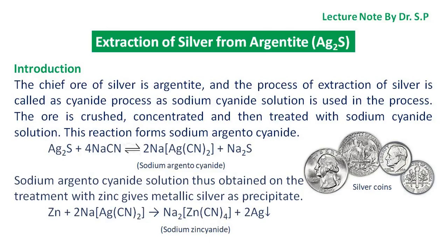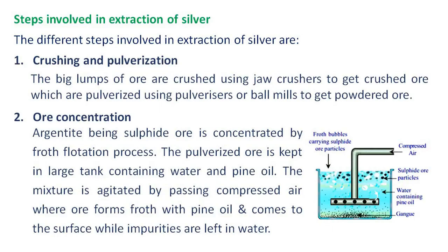The ore is crushed, concentrated, and then treated with sodium cyanide solution. This reaction forms sodium argento cyanide, and the sodium argento cyanide solution thus obtained on treatment with zinc gives metallic silver as precipitate. The different steps involved in extraction of silver are: Crushing and pulverization — the big lumps of ore are crushed using jaw crushers to get crushed ore, which are pulverized using pulverizers or ball mills to get powdered ore.